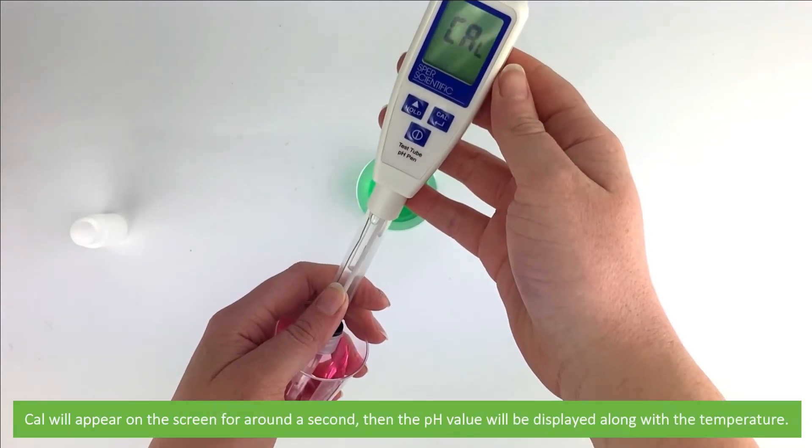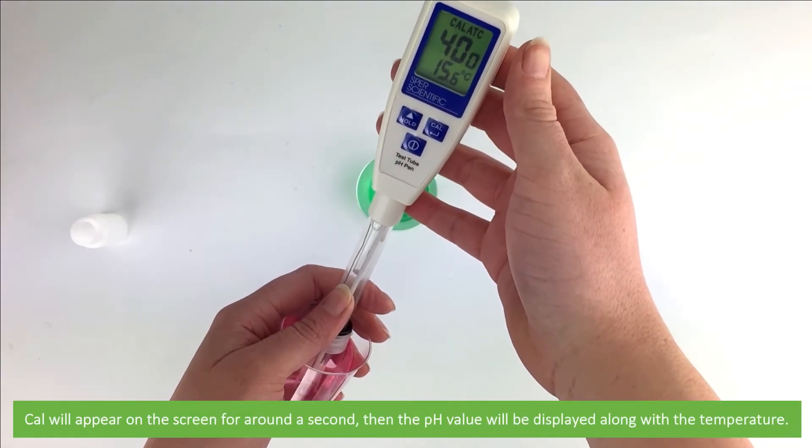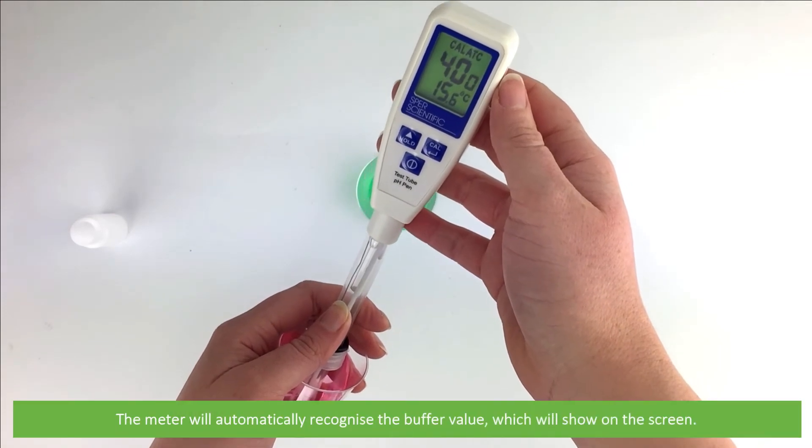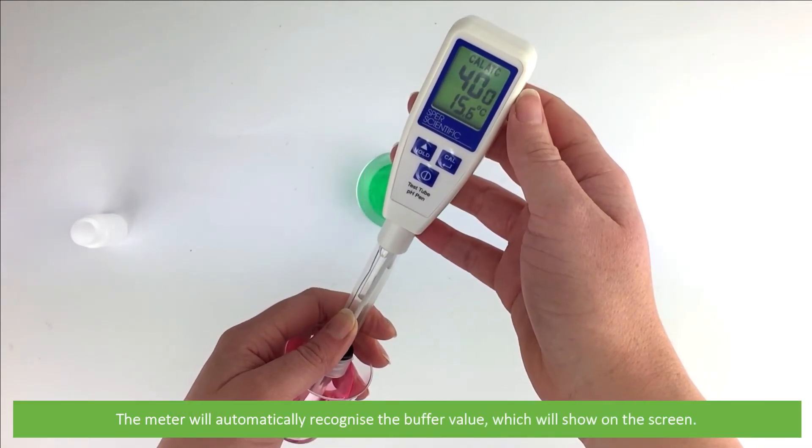CAL will appear on the screen for around a second, then the pH value will be displayed along with the temperature. The meter will automatically recognize the buffer value which will show on the screen.